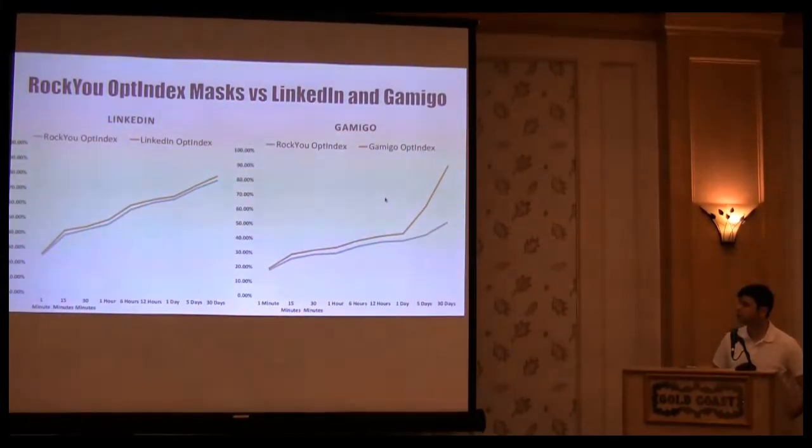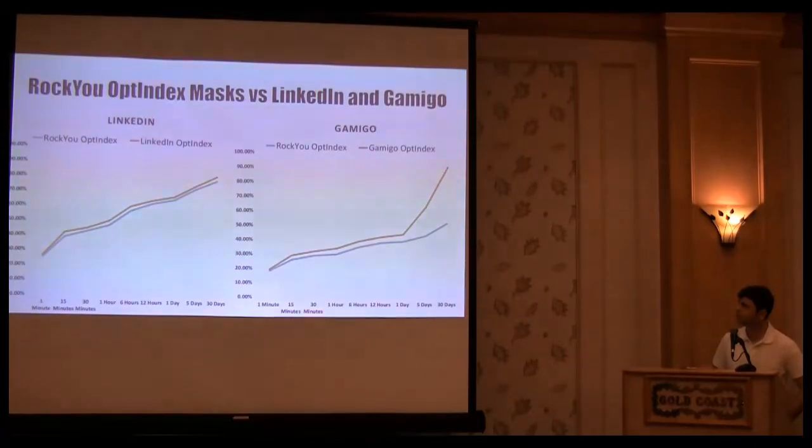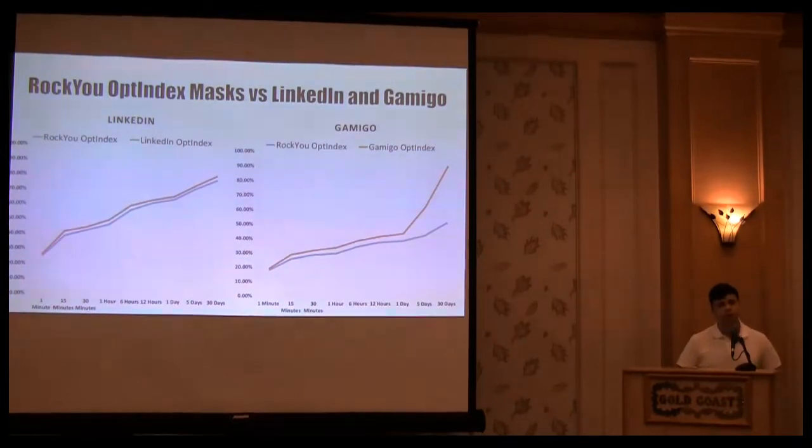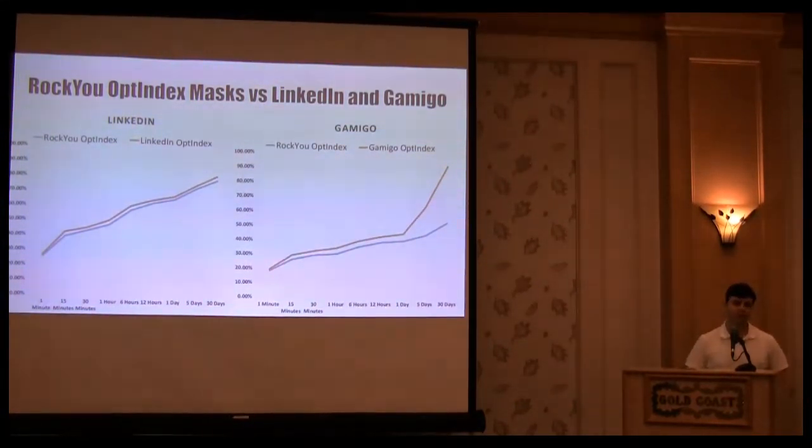Applying it to actual leaked lists. I generated masks for just one day, using RockYou list as a sample, and applied it to a whole bunch of different leaks. The blue line represents the mask generated by RockYou, and the red line represents the most optimal mask attack that you can perform against those leaks. In the case of LinkedIn, it's almost perfect. Within five days, you get 70% or more.